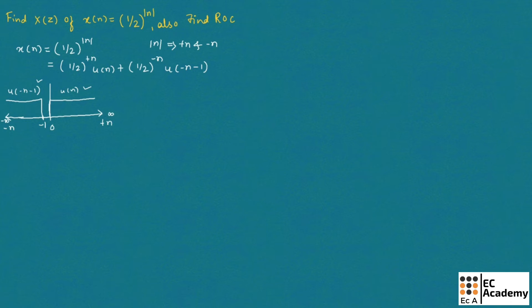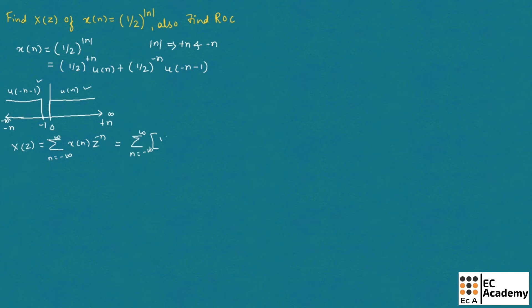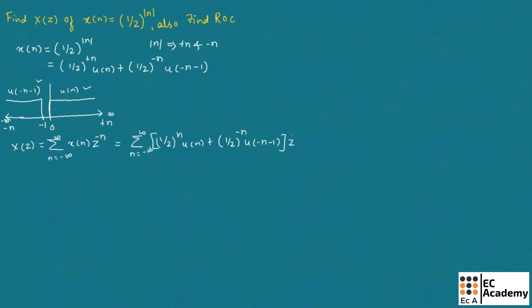We know we can represent X(Z) as the summation from N equals minus infinity to infinity of x(n) times Z to the power of minus N. Substituting the value of x(n), we write this as summation from minus infinity to infinity of [(1/2)^N U(n) plus (1/2)^(-N) U(-n-1)] times Z^(-N).